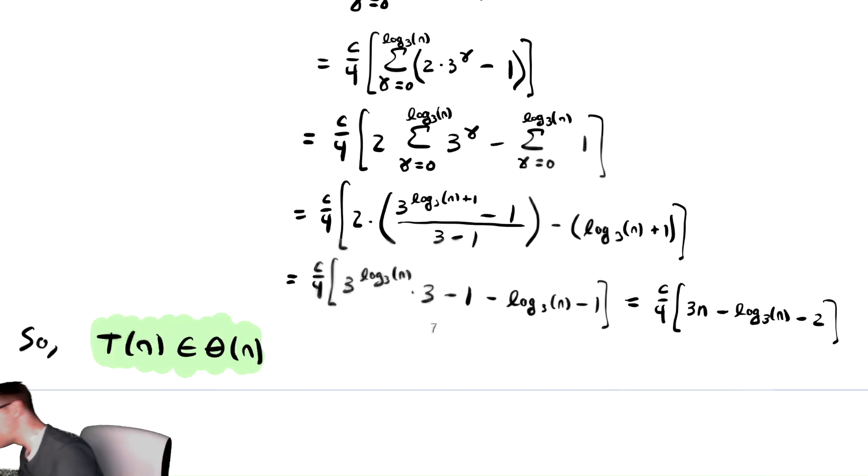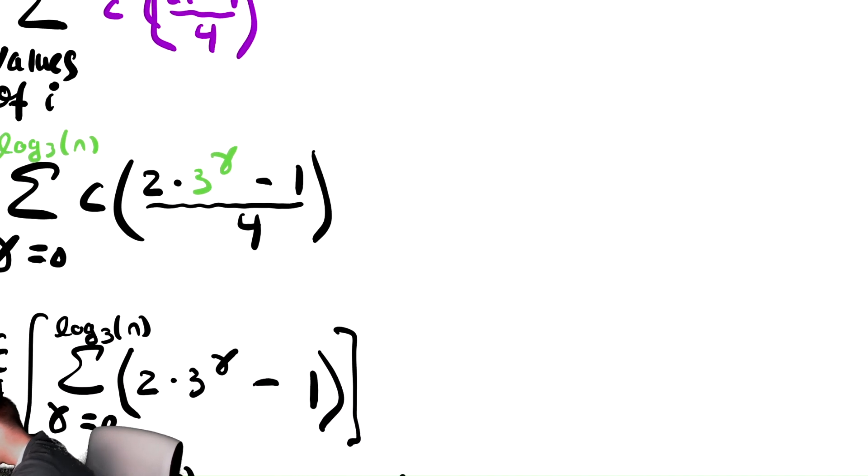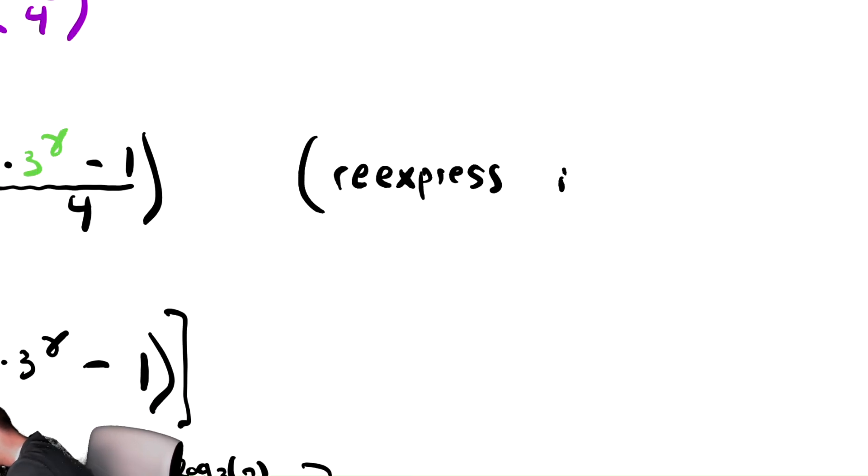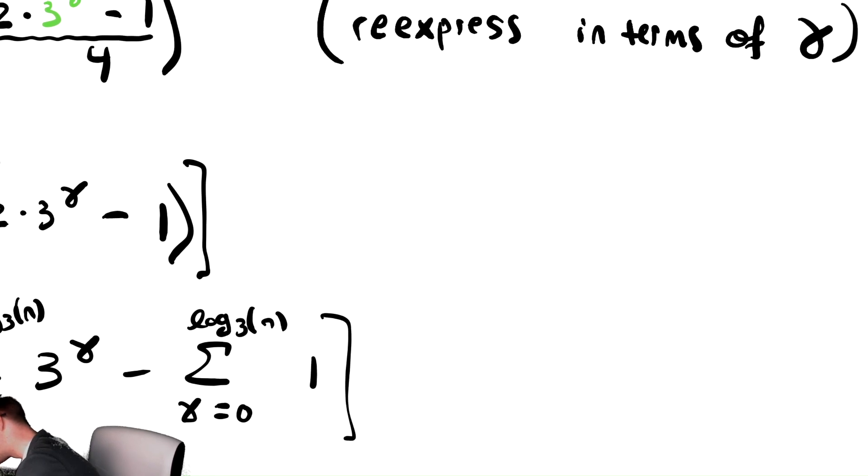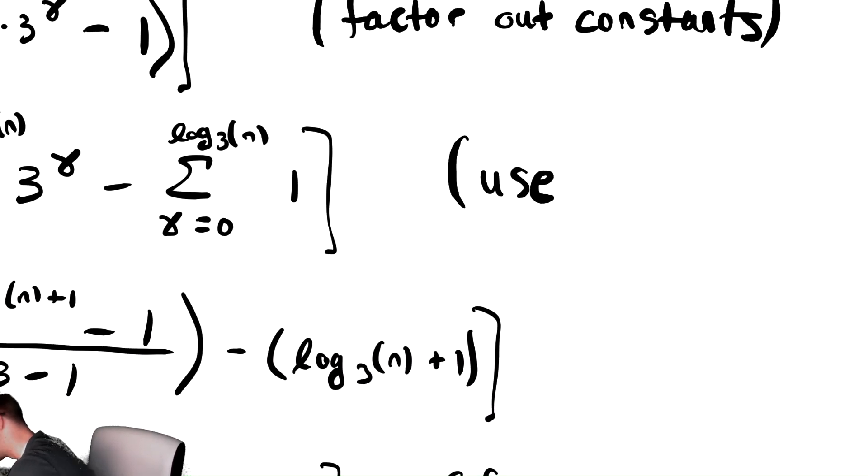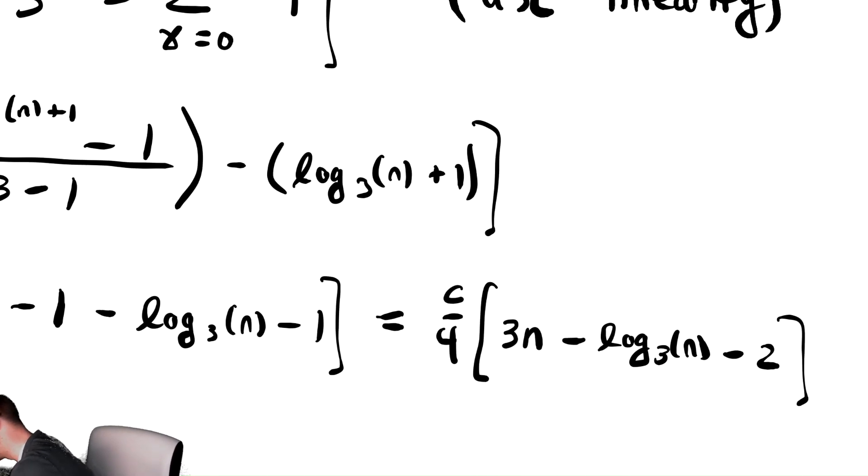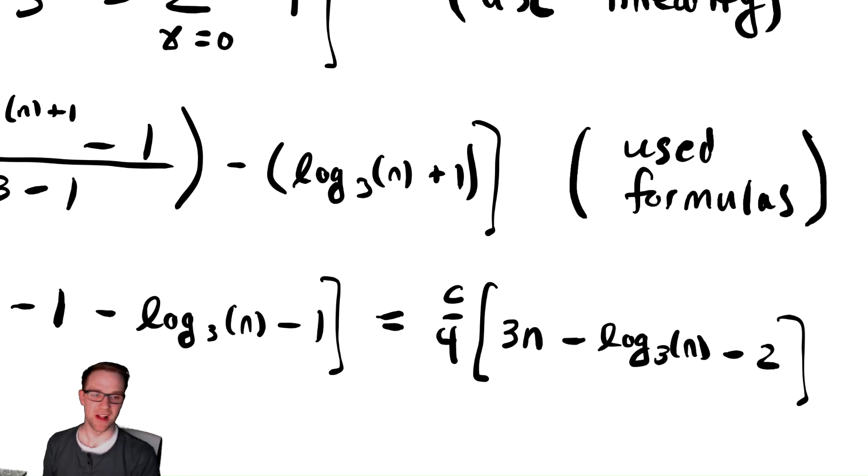And just so we can identify what's happening, maybe we can go back and label our steps. This helps some people to memorize what's happening and associate the right words. I said them all out loud while I was doing them, but labeling them explicitly can sometimes help. So the first thing we did was re-express the sum in terms of gamma. In the previous problem that was k and this problem it was gamma. We then factored out constants, which works because of linearity. We then again used linearity, meaning we can distribute across summations and factor out constants.